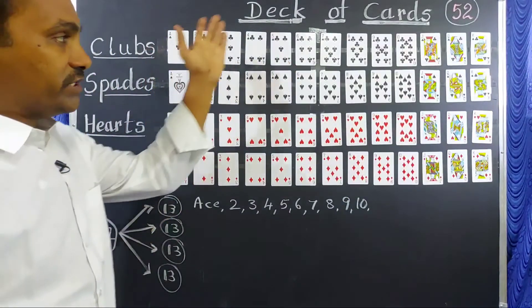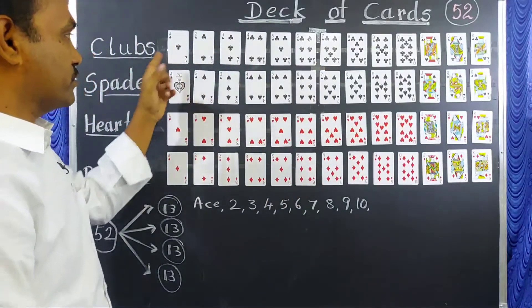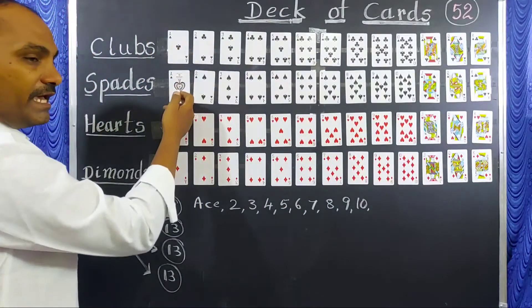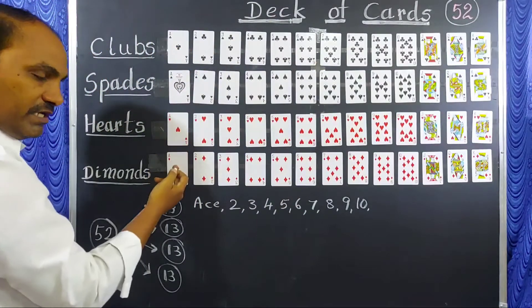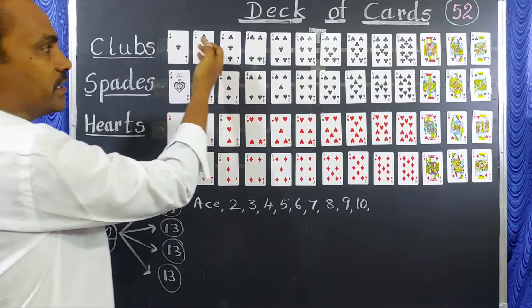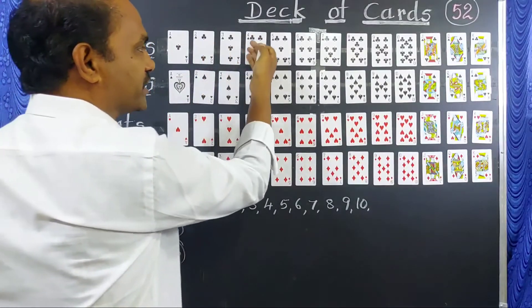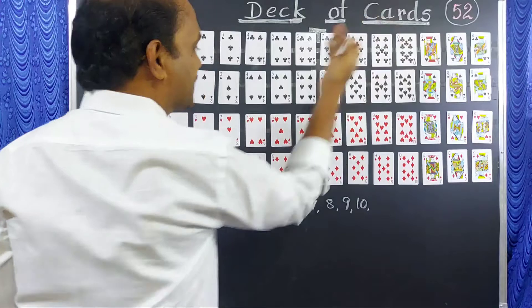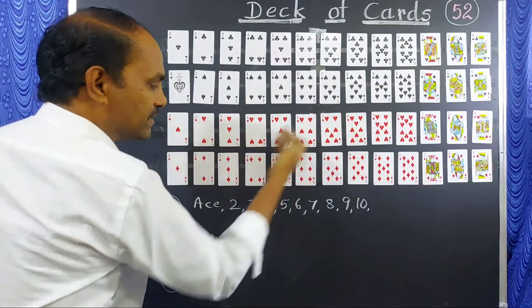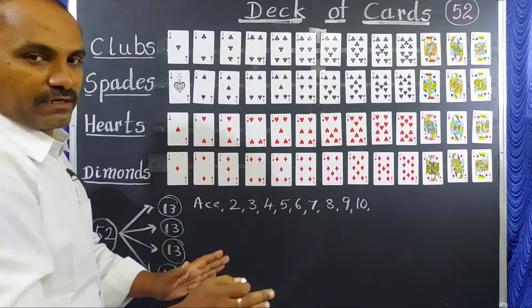In each suit, Ace is there and number cards 2, 3, 4, 5, 6, 7, 8, 9, and 10. In each suit, the same number of cards are there.